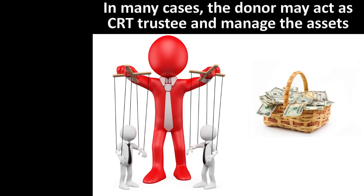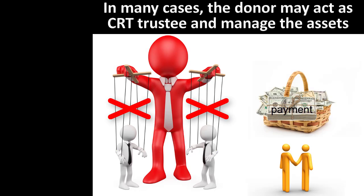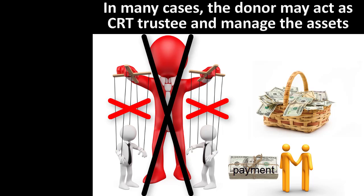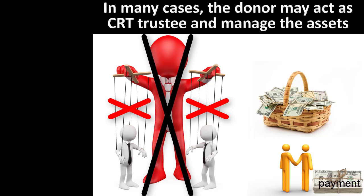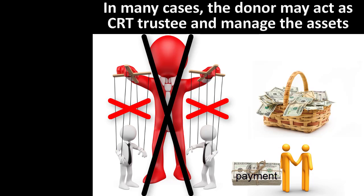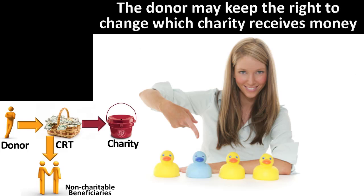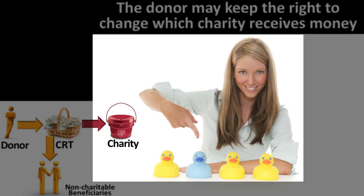However, some plans will require the use of an independent trustee. For example, the donor may not act as trustee if the trust allows for payments to be withheld or shifted amongst various non-charitable recipients, as this keeps too much power with the donor and causes the trust to be treated as simply the property of the donor. Although the donor may not keep any rights to change which non-charitable beneficiaries receive payments, the donor is permitted to decide which charity will receive the remainder interest at the termination of the charitable remainder trust.